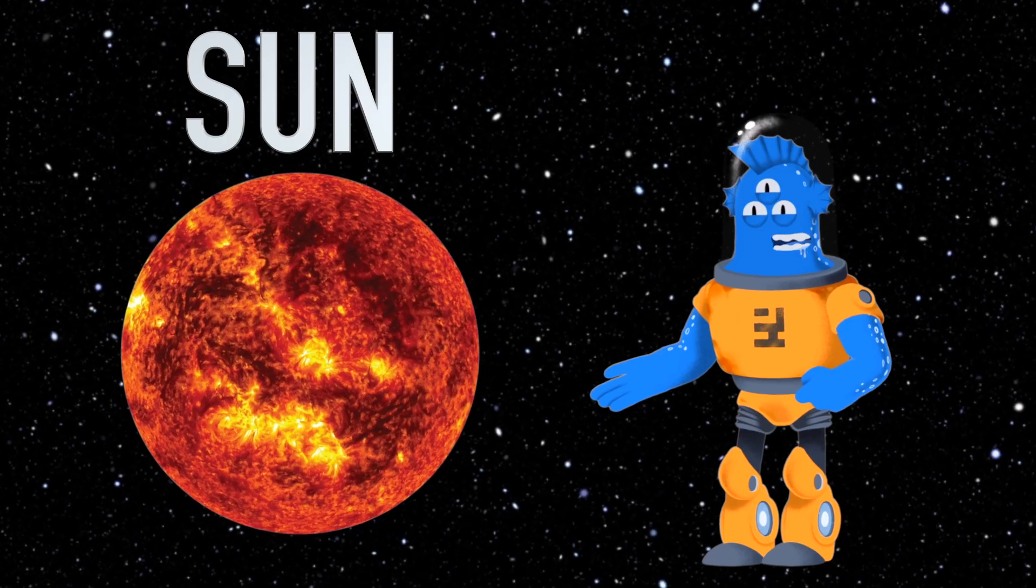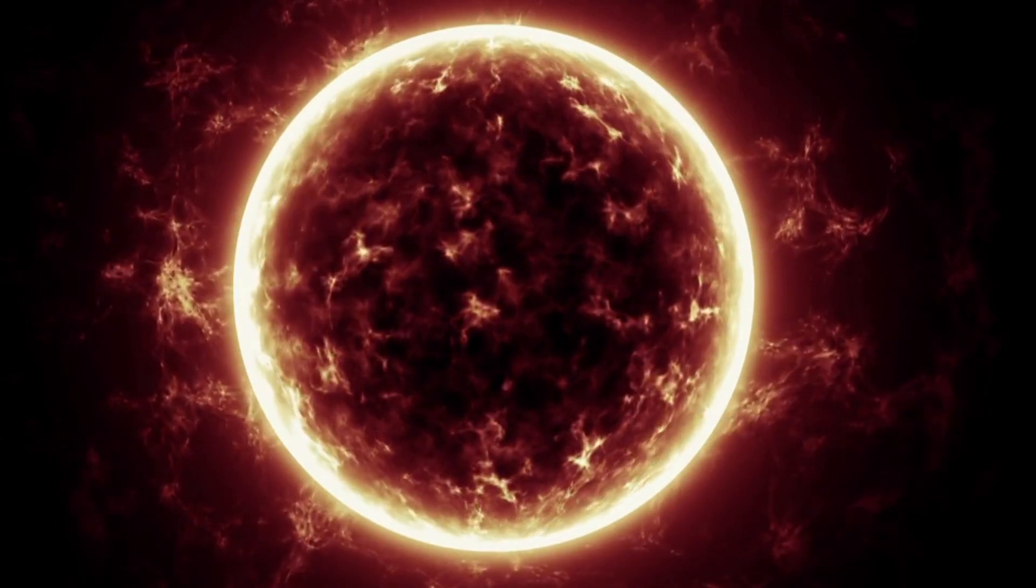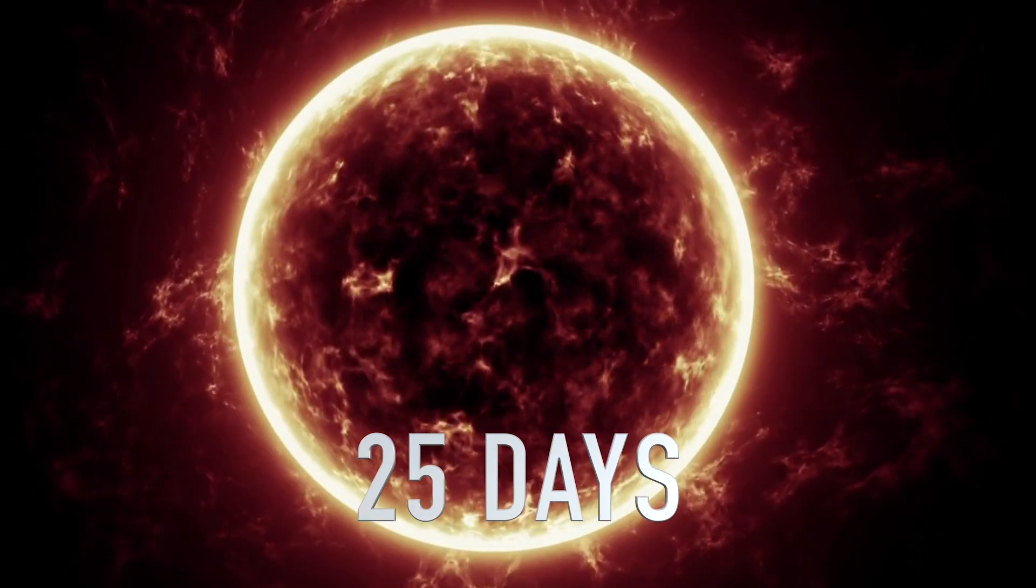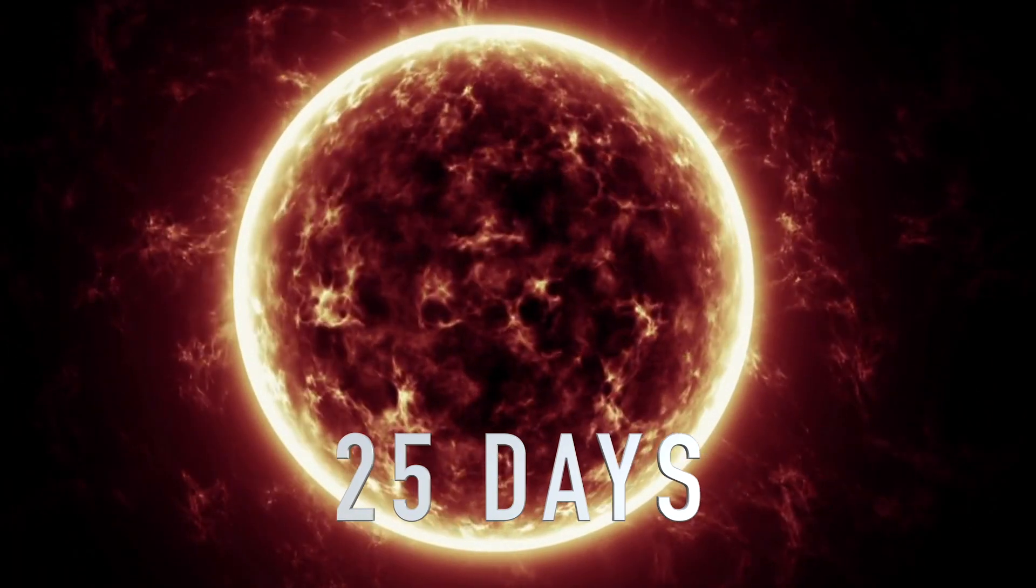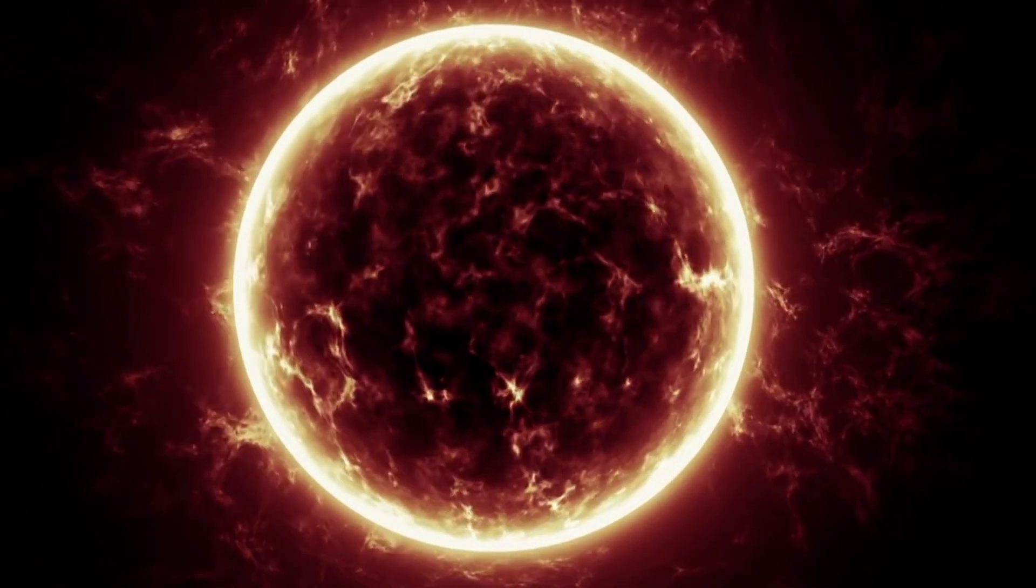The sun doesn't just sit still in space. It's constantly spinning. It takes about 25 days for the sun's surface to complete one full rotation. It's like a cosmic dance party up there.